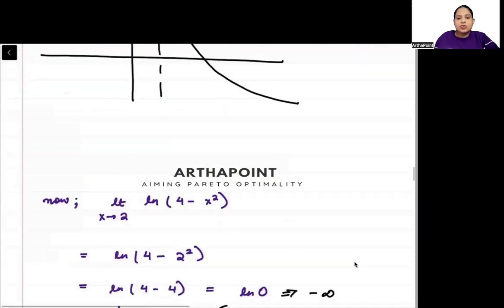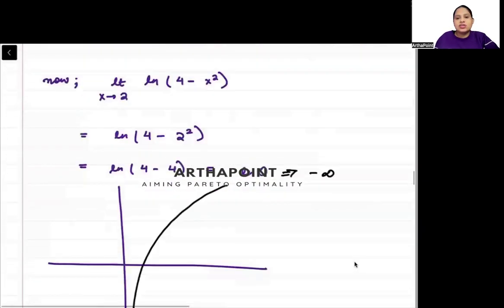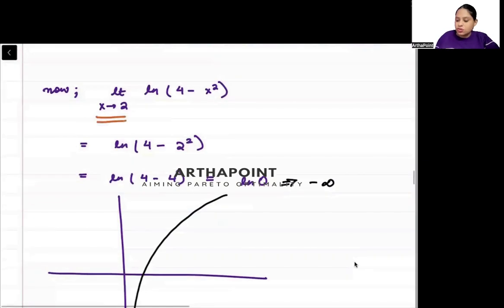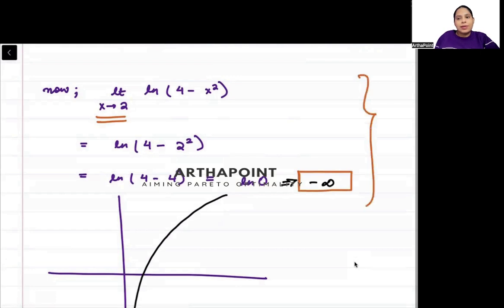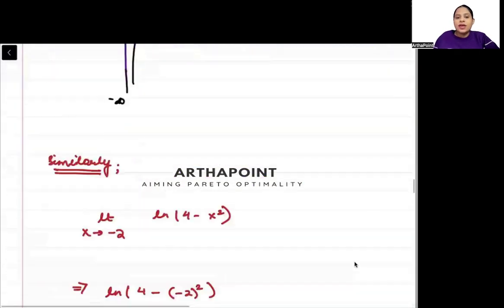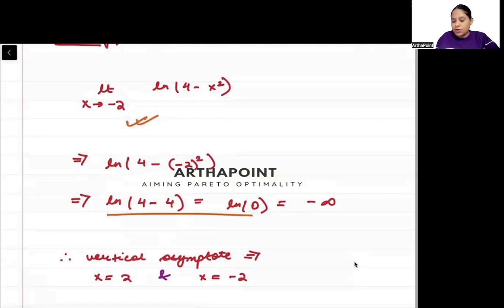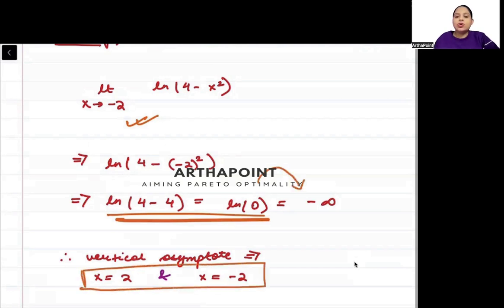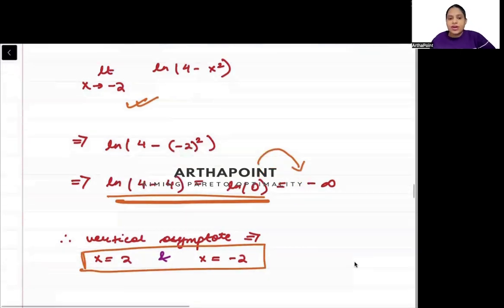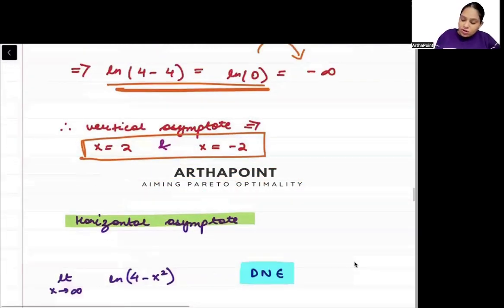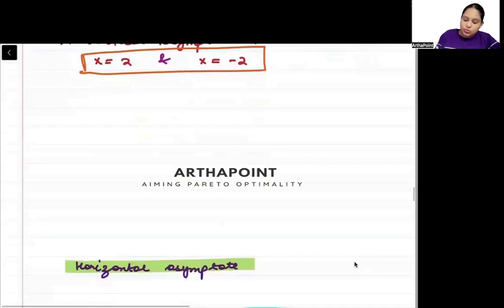So the vertical asymptotes — when x is approaching 2, the function approaches minus infinity. When x is approaching minus 2, it also becomes ln(0) and hence approaches minus infinity. You will have your vertical asymptotes at x equals 2 and x equals minus 2.